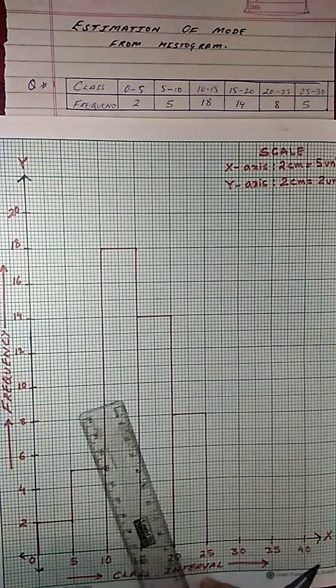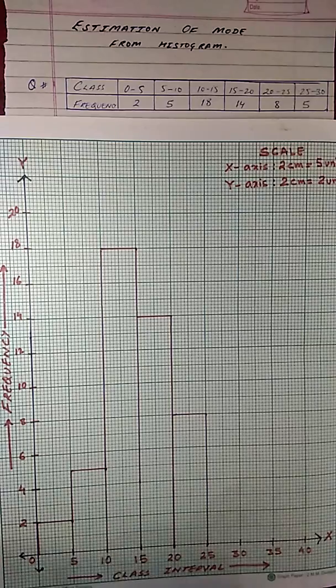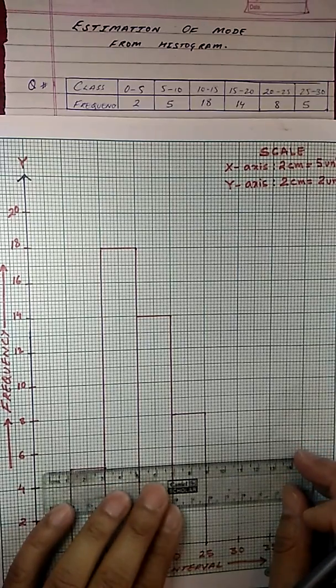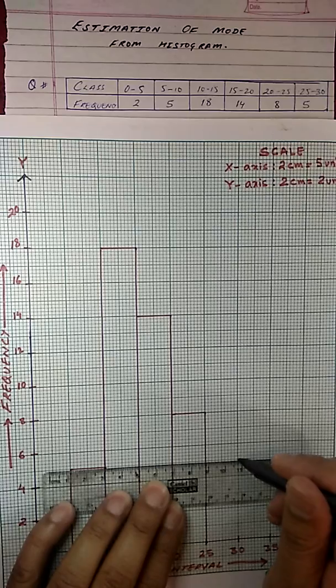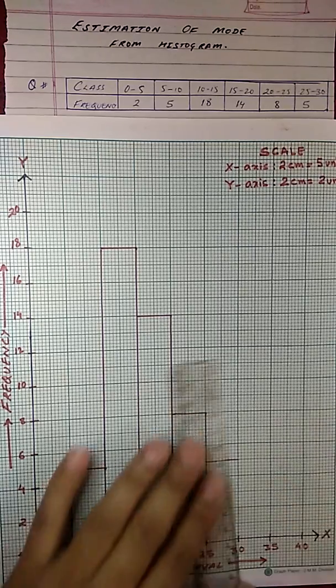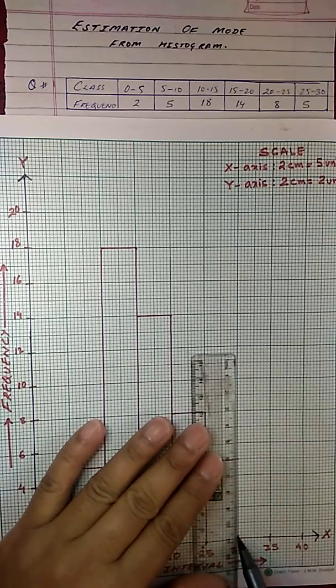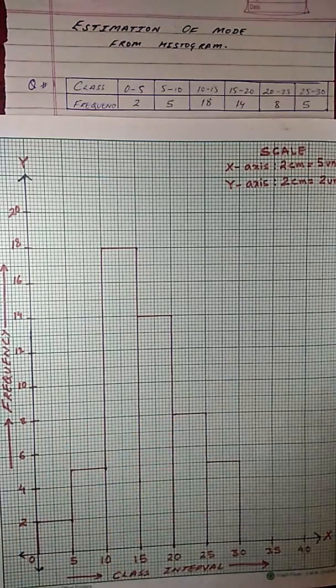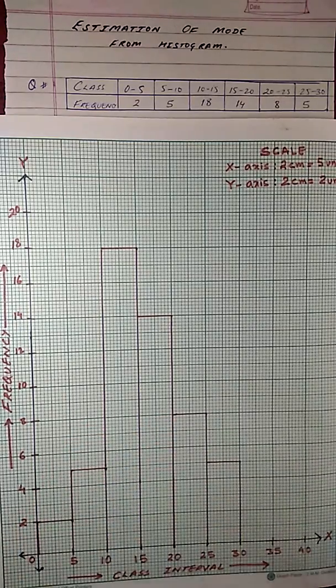Now the last one. 25 to 30 is 5. Again 5 will lie between 4 and 6 which is exactly here. Like this. So now this completes our histogram.